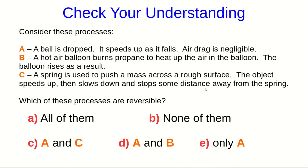Let's check that you're understanding some of these ideas about how to recognize irreversible versus reversible processes. So consider three processes. A ball being dropped, and so it speeds up as it falls, and there's no air drag. A hot air balloon, which burns propane, which heats up the air in the balloon, and the balloon rises because of that. And C, a spring is being used to push a mass across a rough surface. It launches that object, so the object speeds up, but then it's eventually going to slow down and stop. Which of these processes are reversible?